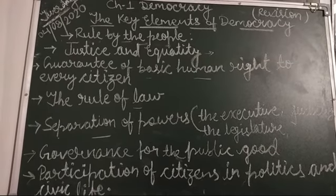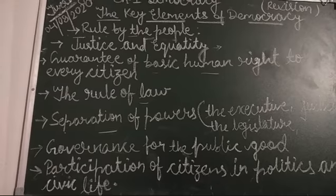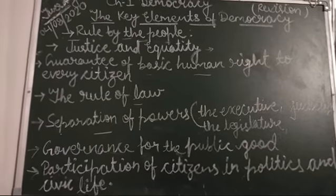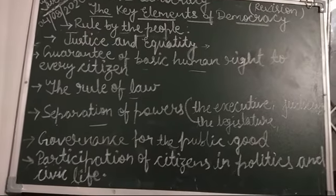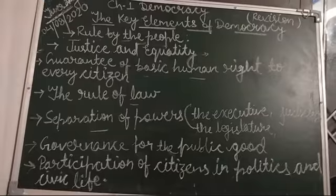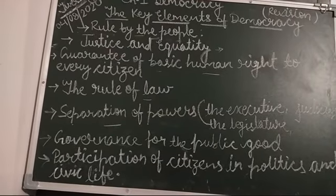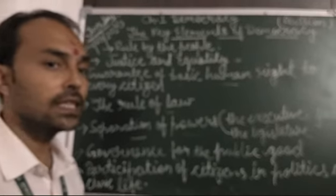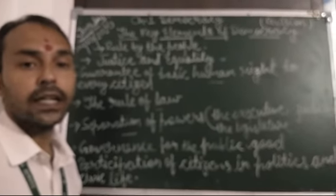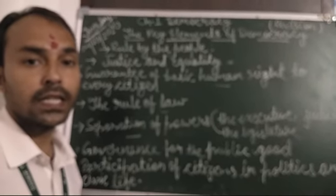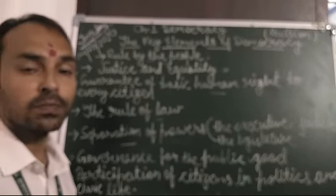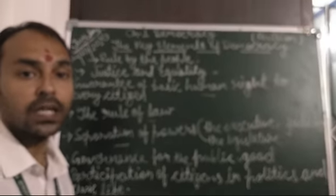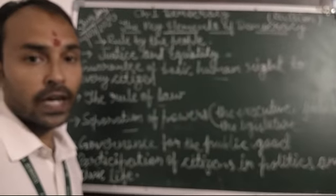The last element is the participation of citizens in politics and civic life. Citizens of a democracy participate actively in its functioning and are well informed about the issues facing the country and how they want those issues addressed. Once representatives are elected, citizens continue to keep a watch on the leaders they have chosen. In conclusion, citizens are the center point around which democracy revolves, holding the highest authority. For the smooth functioning of democracy, citizens must participate in all its functions actively and peacefully.